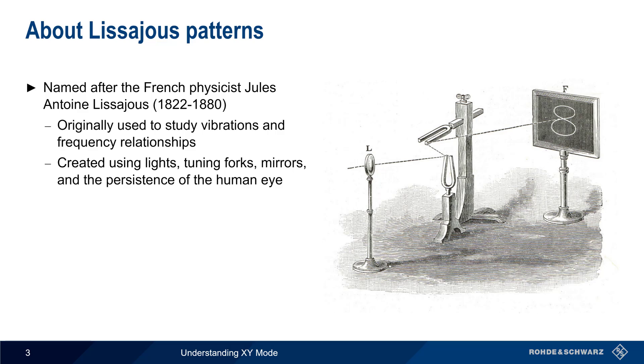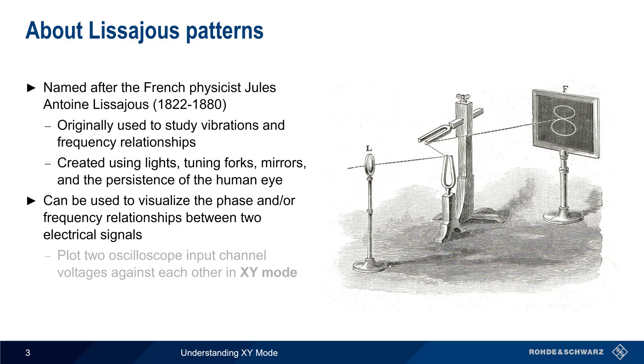Although Lissajous patterns were originally used for studying audio signals, in modern times they're often used to visualize the phase and or frequency relationship between two electrical signals. This is done by plotting two oscilloscope input channels against each other in so-called XY mode.